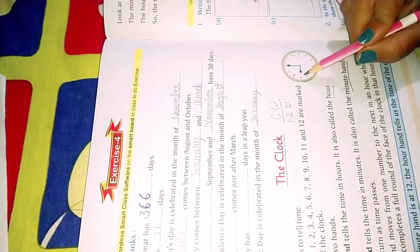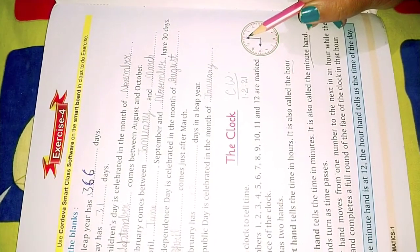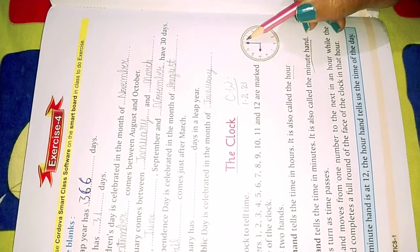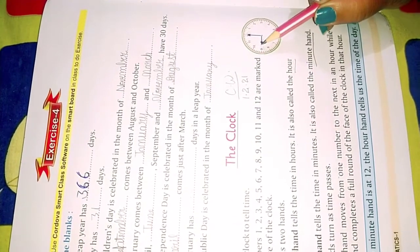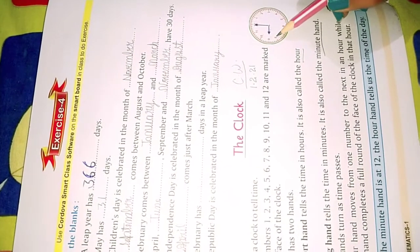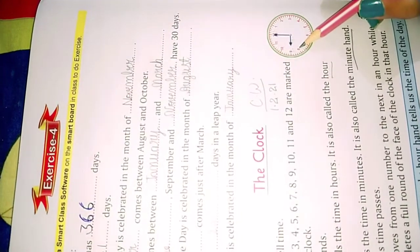The hour hand will tell us the time of the day. Now if the hour hand is on 9, it will tell us 9 o'clock. The minute hand has to be on 12, and this will change the number, whichever number it is showing - that is the time of that period.